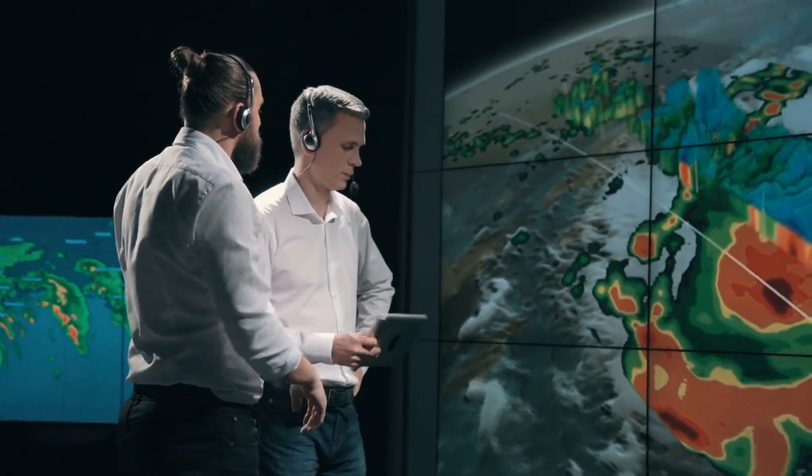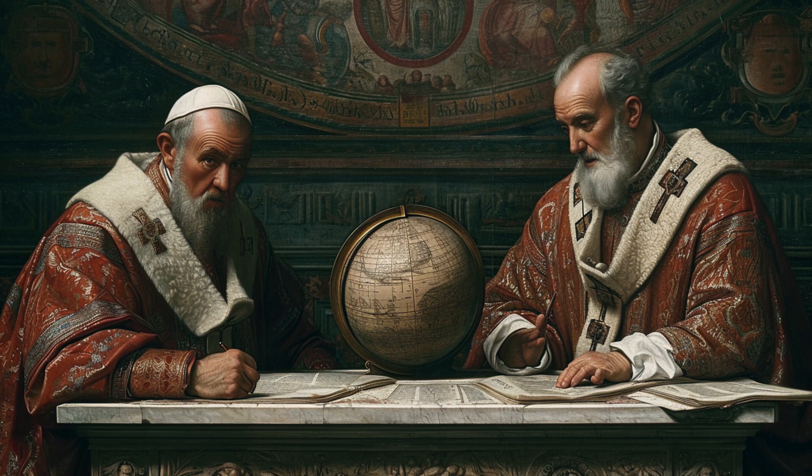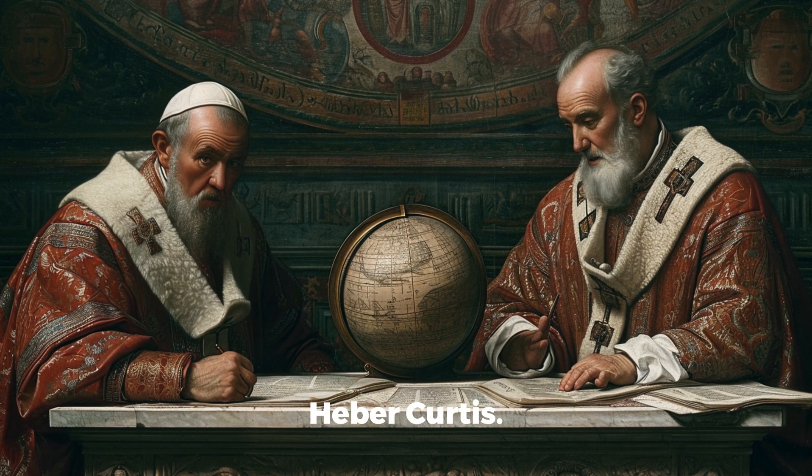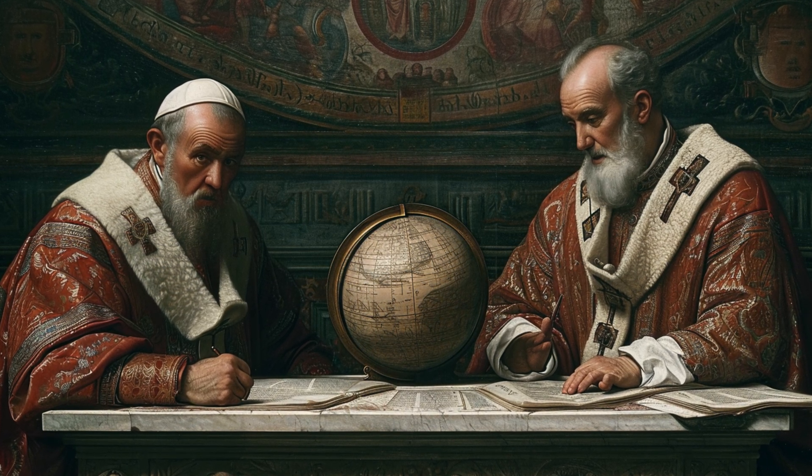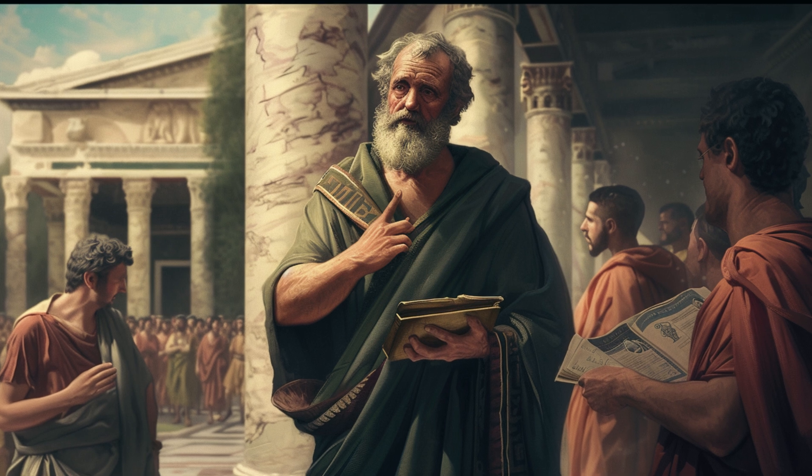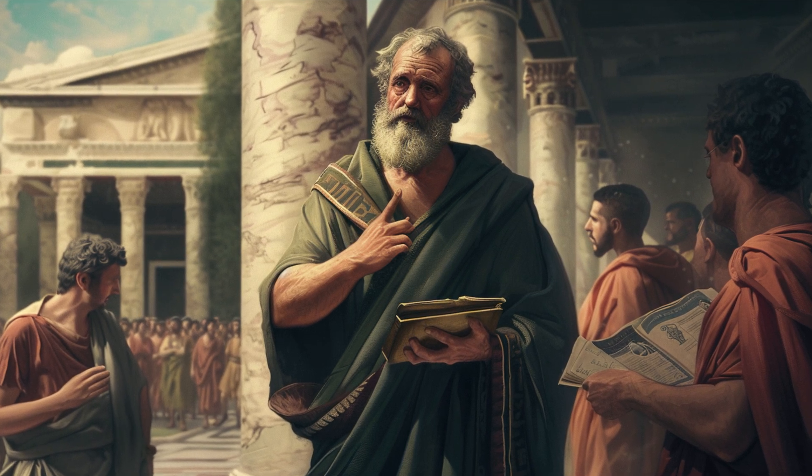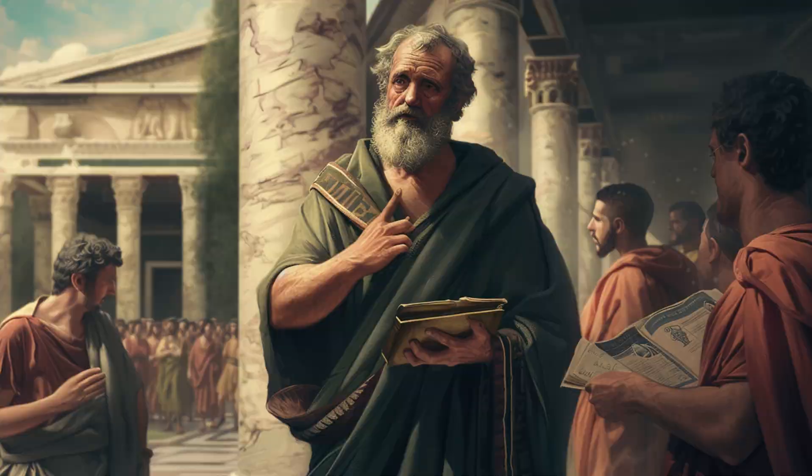In the early 20th century, the nature of the spiral nebulae was the subject of the great debate between Harlow Shapley and Heber Curtis. Shapley argued that the Milky Way was the entire universe, while Curtis believed that the universe consisted of numerous galaxies like the Milky Way.